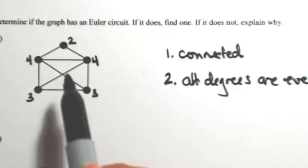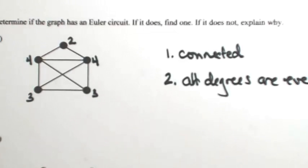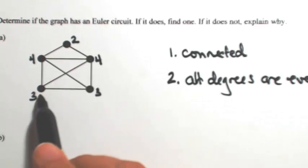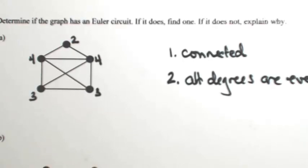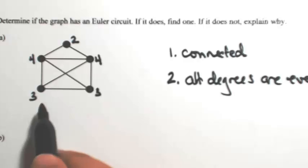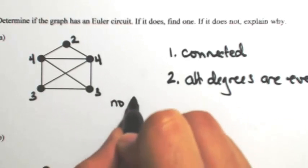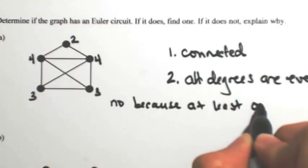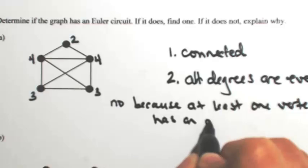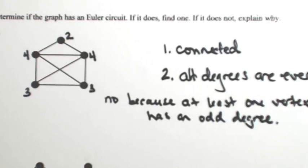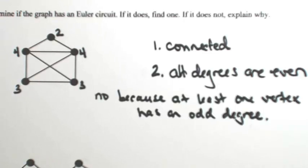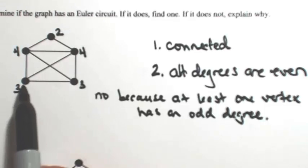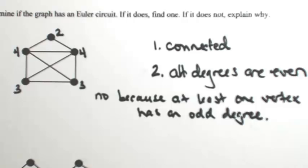So the first thing is that this graph is connected — I can get from any vertex to another somehow — but all the degrees are not even. If we look at the bottom left, we have two odd degrees. Because I have at least one vertex with an odd degree, this will not have an Euler circuit. This graph will not have an Euler circuit, but it will have an Euler path because we have a pair of odd vertices, meaning I could trace all of the edges once and only once but would end in a different spot from where I started.